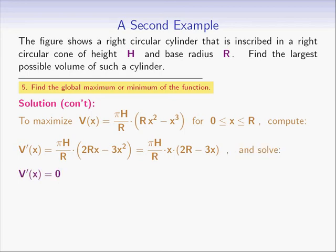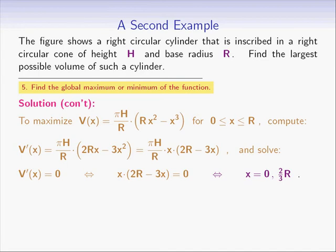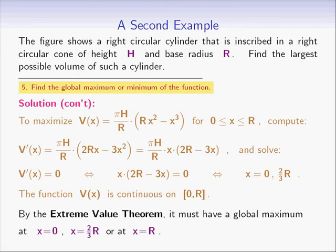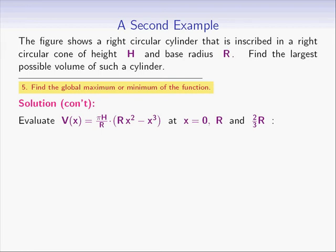Setting v prime of x equals 0 leads to x times (2r minus 3x) equals 0, giving solutions x equals 0 and x equals 2r/3. Our function is a polynomial, hence continuous on the closed interval, so by the extreme value theorem the maximum occurs at a critical point or at an endpoint. We check x equals 0, x equals 2r/3, and x equals r.